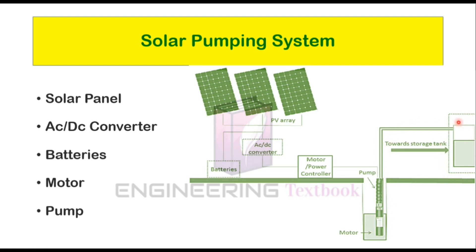And then there is a storage tank to store the water. Coming to the working of the solar pumping system, it works on the basic photovoltaic principle. When solar energy falls on the solar panel, it gets converted into electrical energy in the form of DC current. This DC current can either drive a DC motor directly coupled with a pump, or if the motor is an AC motor, then this DC current is first converted into AC current through the inverter or AC-DC converter. After converting into AC current, this current is used to drive the motor coupled to the pump. The coupled pump will lift the water from low to high towards the storage tank.